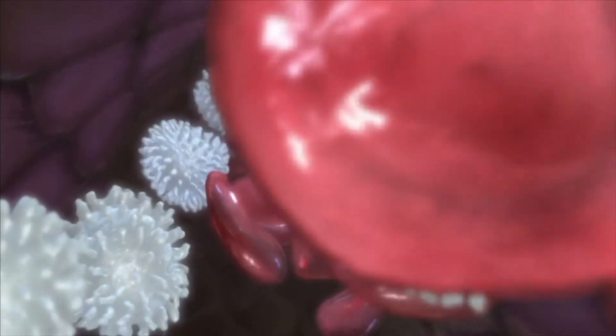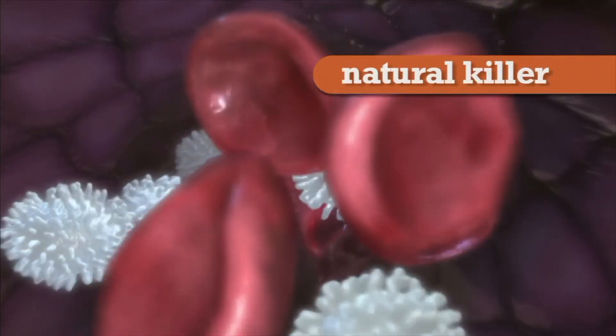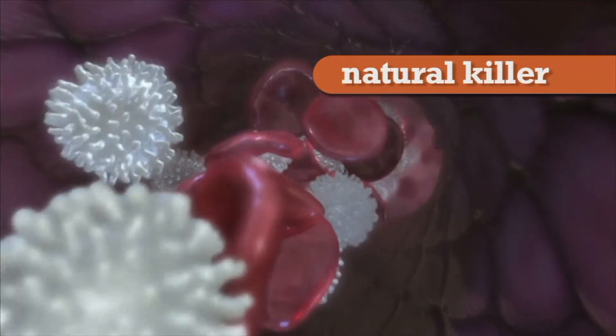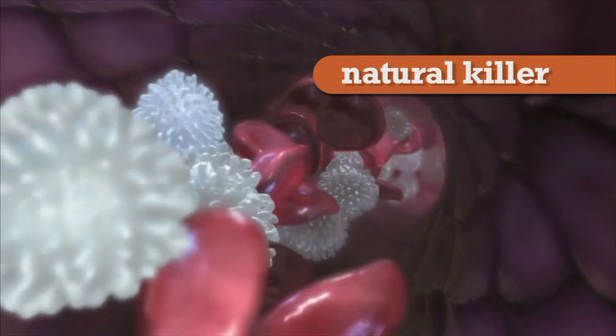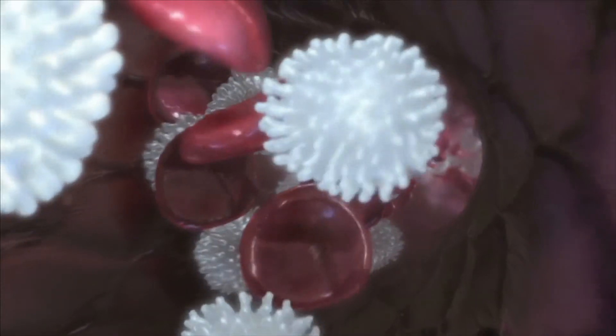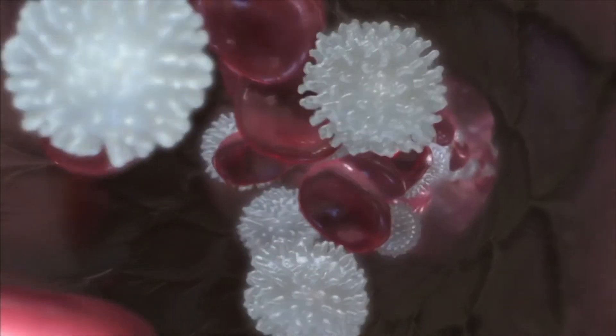There's another type of white blood cell called a natural killer. It recognizes body cells that have become infected by a virus and kills them by releasing chemicals that poke holes in the infected cell's membrane. All these different types of white blood cells coordinate a system that defends the body from infection and damage.